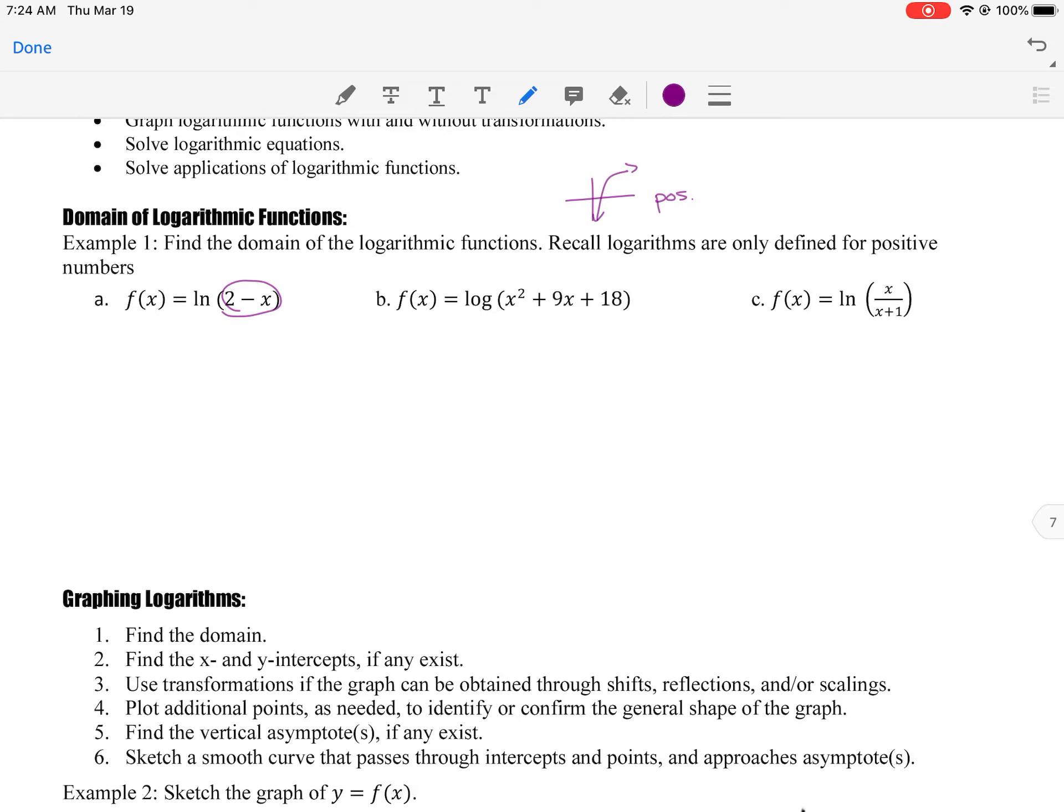So think about setting what your input is. In this case, 2 minus x has to be greater than zero. And solving that inequality. In this case, you could subtract 2 and then divide by a negative x, but remember whenever you divide by a negative, you have to flip the sign. I think it's actually easier to add x to both sides. So 2 is greater than x.